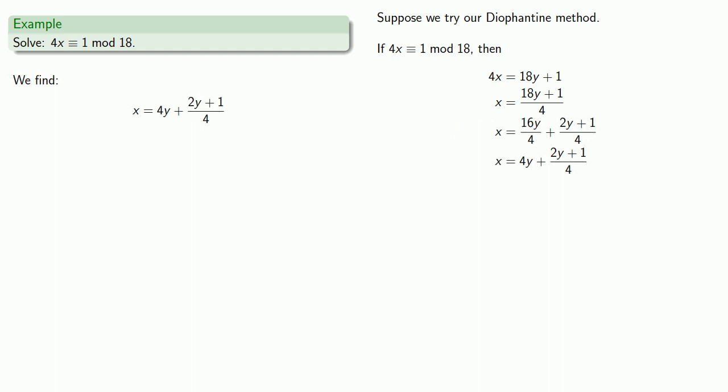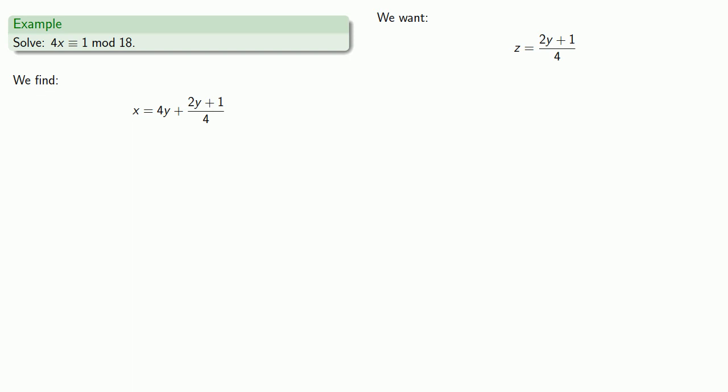And if we want X to be a whole number and Y to be a whole number, then it's necessary that 2Y plus 1 over 4 is also a whole number. And so we'll introduce a new variable for this fractional part. We'll call this Z, and then solve for Y.